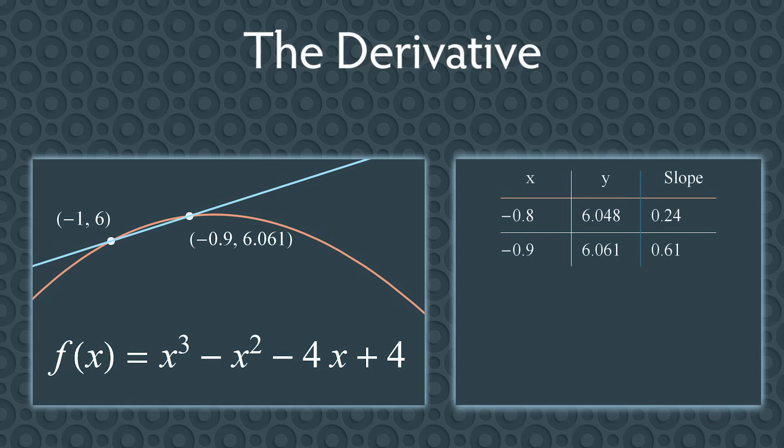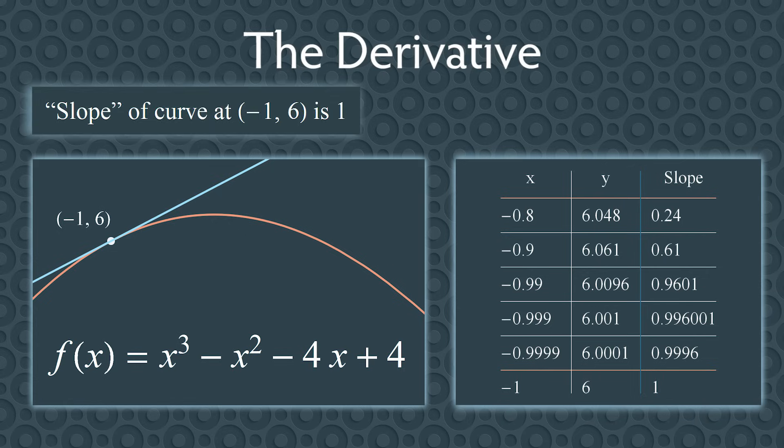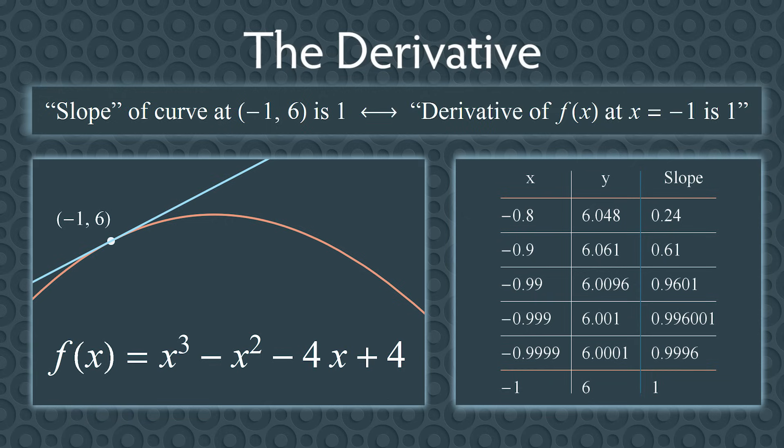If you keep picking closer and closer points and computing the slopes of the lines, you'll get a sequence of slopes, which are getting closer and closer to some number. The lines are getting closer and closer to the tangent line, and the slopes are approaching 1. So we say the slope of the curve at the point negative 1, 6 is 1. We call this number the derivative of f of x at the point where x equals negative 1. This is the slope of the tangent line through the point negative 1, 6.